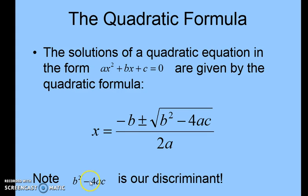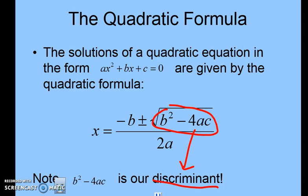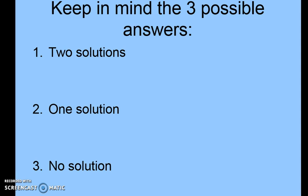Note: b squared minus 4ac is our discriminant — that part of the quadratic formula is called the discriminant. Keep in mind the three possible answers: two solutions, one solution, or no solution.